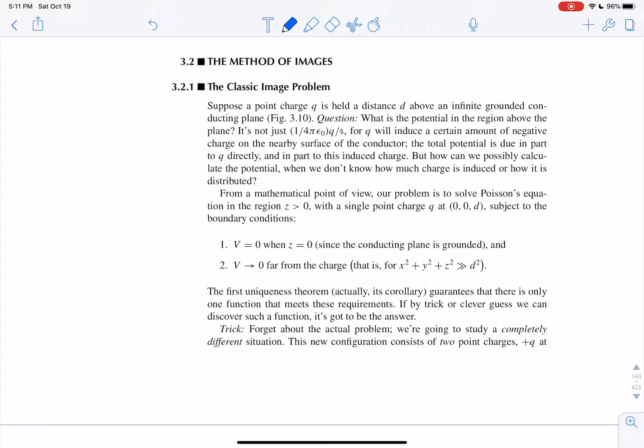Howdy, folks. Let's talk about the method of images now, section 3.2. So the classic image problem is you've got a point charge Q, a distance D above an infinite grounded plane. That means charge can freely move in whatever on that plane, and then you've got a charge above it somewhere.